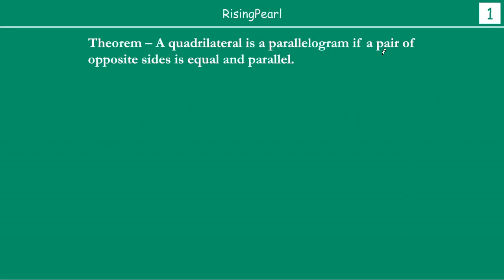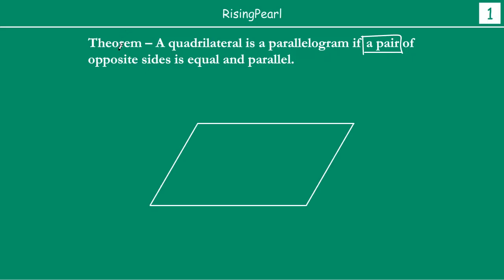A quadrilateral is a parallelogram if a pair of opposite sides — the important thing is that it is a pair. Let us draw a quadrilateral first. This is something we have discussed before: why we are drawing it already in the form of a parallelogram, because we are proving that finally the quadrilateral is a parallelogram. So let's call it A, B, C and D. So ABCD is our quadrilateral.